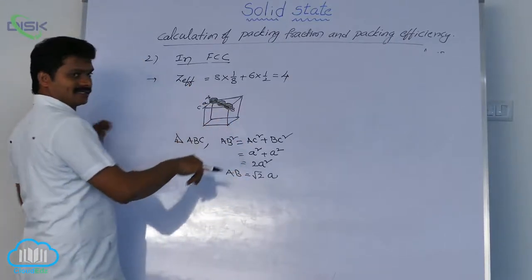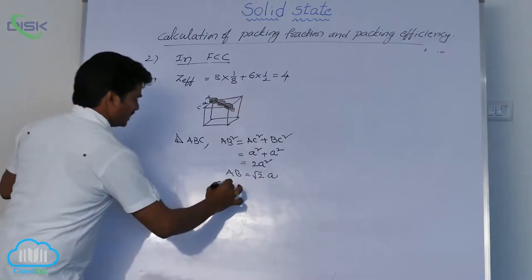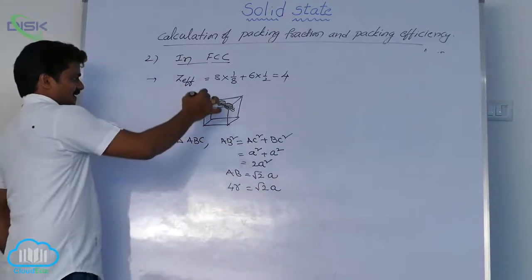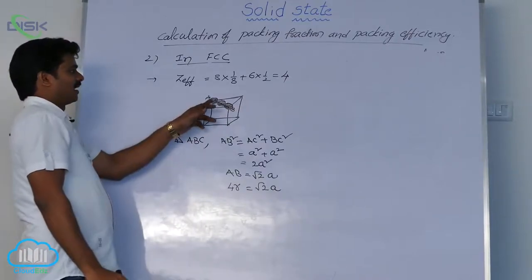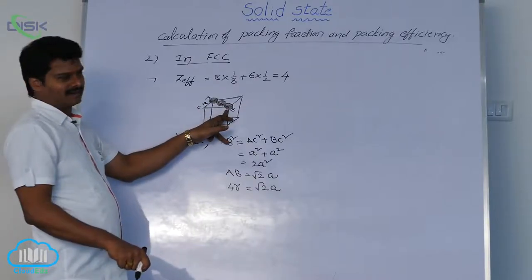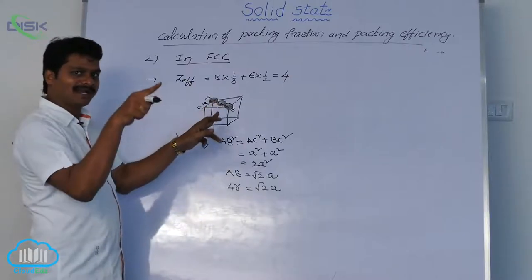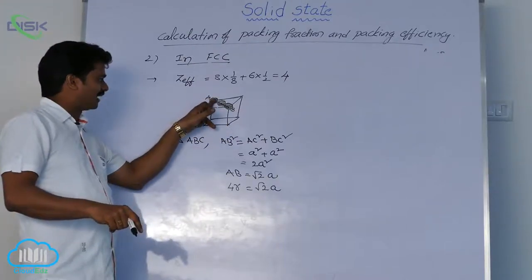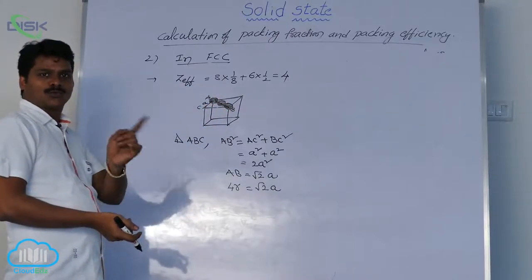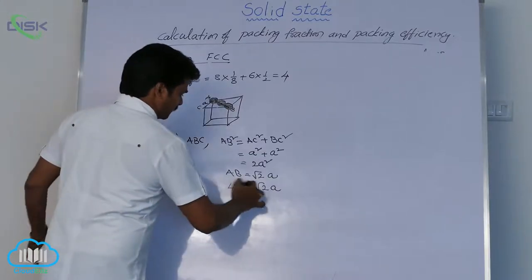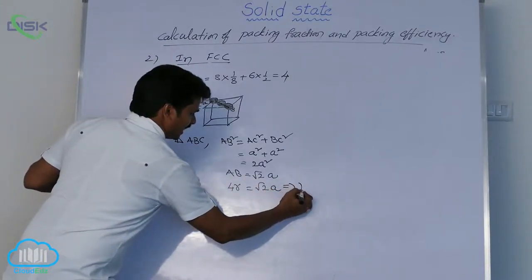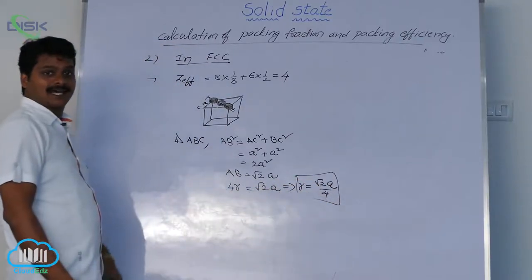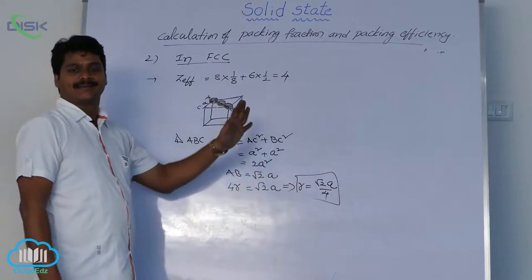This AB is also called 4R. AB is 4R because along the face diagonal, atoms are in contact. A corner atom is a half sphere, meaning radius R, and the face-centered atom is a complete sphere, meaning diameter 2R. So R plus 2R plus R equals 4R. Therefore 4R equals root 2 times A, and from this R equals root 2 times A divided by 4. This is the relation between radius of atom and edge length in FCC geometry.